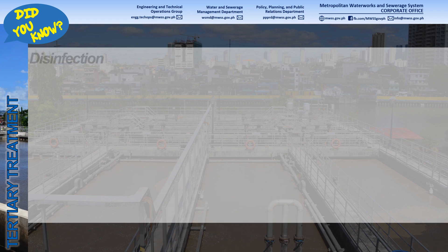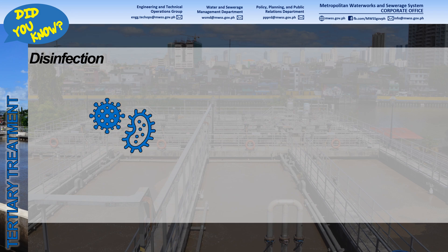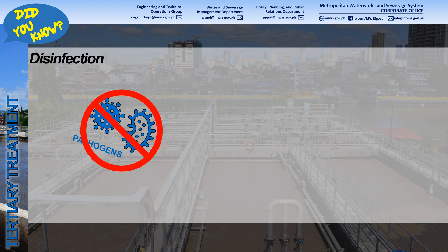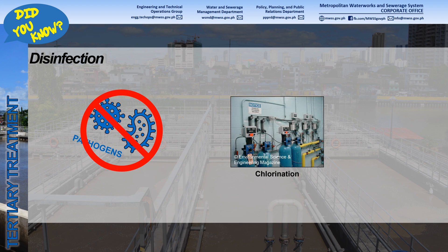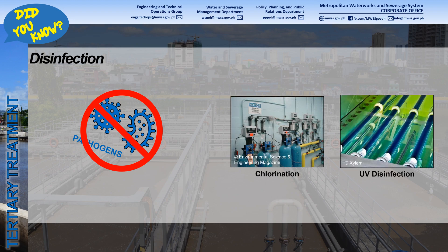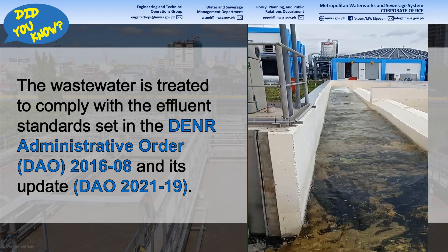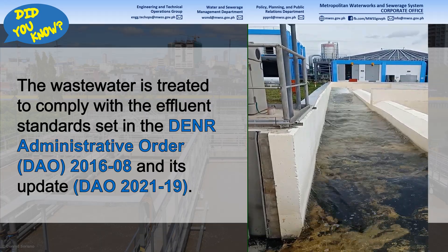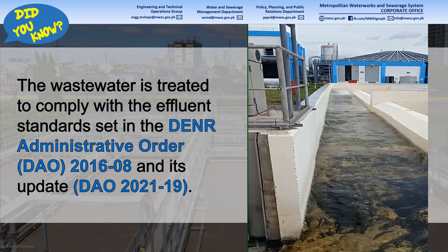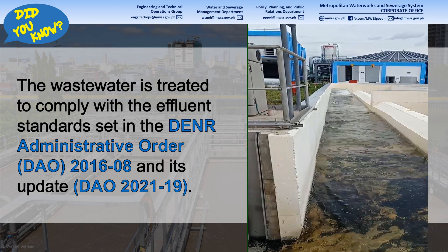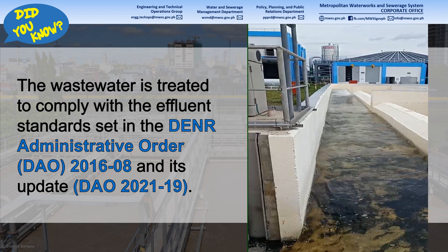Wastewater is further treated based on the regulatory effluent parameters that it needs to comply with. The most common tertiary treatment process used is disinfection, wherein the remaining pathogens or disease-causing microorganisms are killed. Common disinfection processes used include chlorination or UV disinfection. The wastewater is treated to comply with the effluent standards set in the DENR Administrative Order 2016-08 and its update DAO 2021-19.